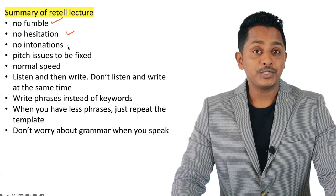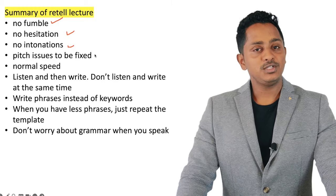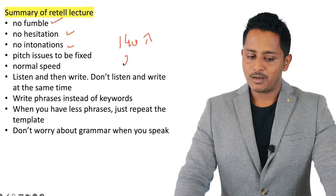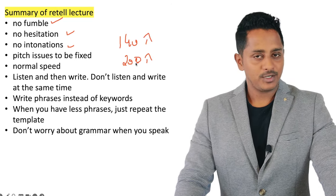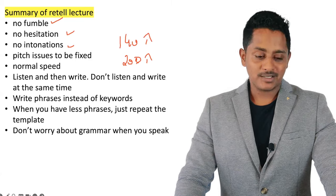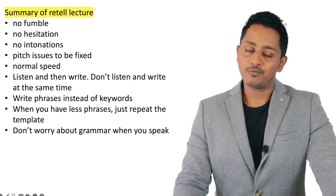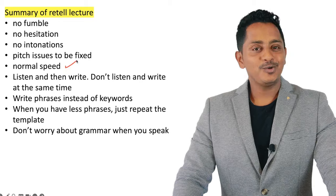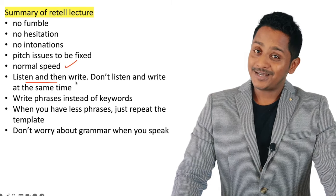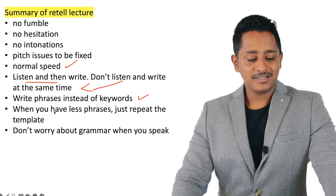Summary of Retell Lecture: no fumbles, no hesitations, no exaggerated intonation — don't sing 'the lecture gives the important key points.' Keep it natural. Pitch issues need to be fixed — for male voices I recommend 140 Hz and above, for female 200 Hz and above. If you're outside this range, work on it. Whatever you do in Read Aloud, do the same in Retell Lecture, Describe Image, and Repeat Sentence. Normal speed — not too fast, not too slow.